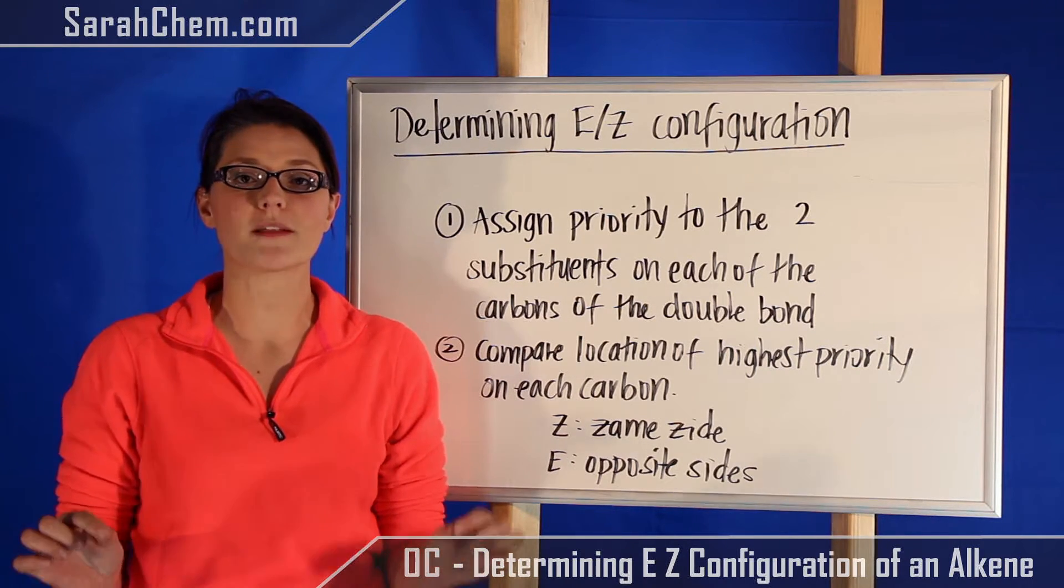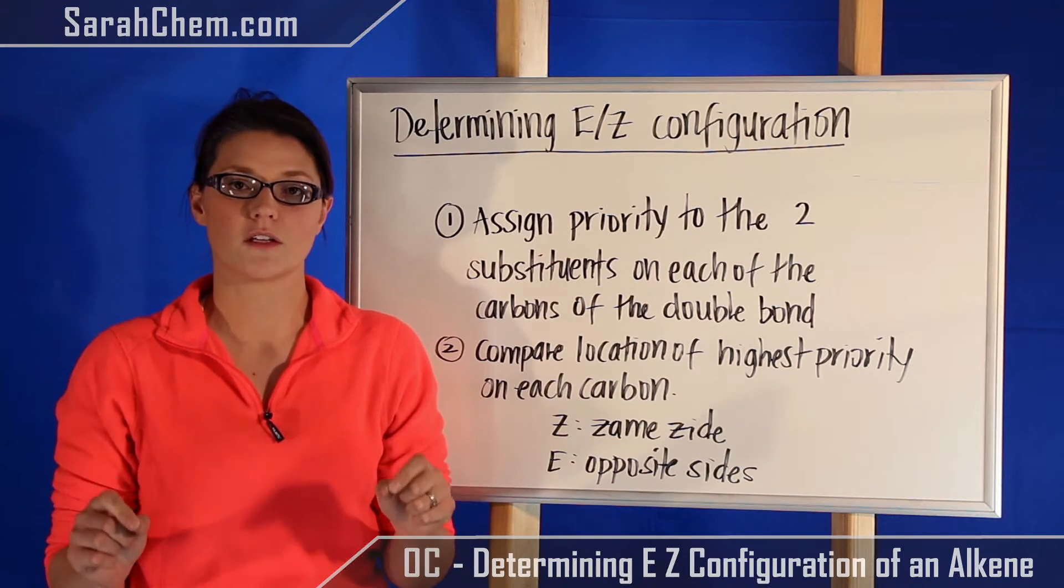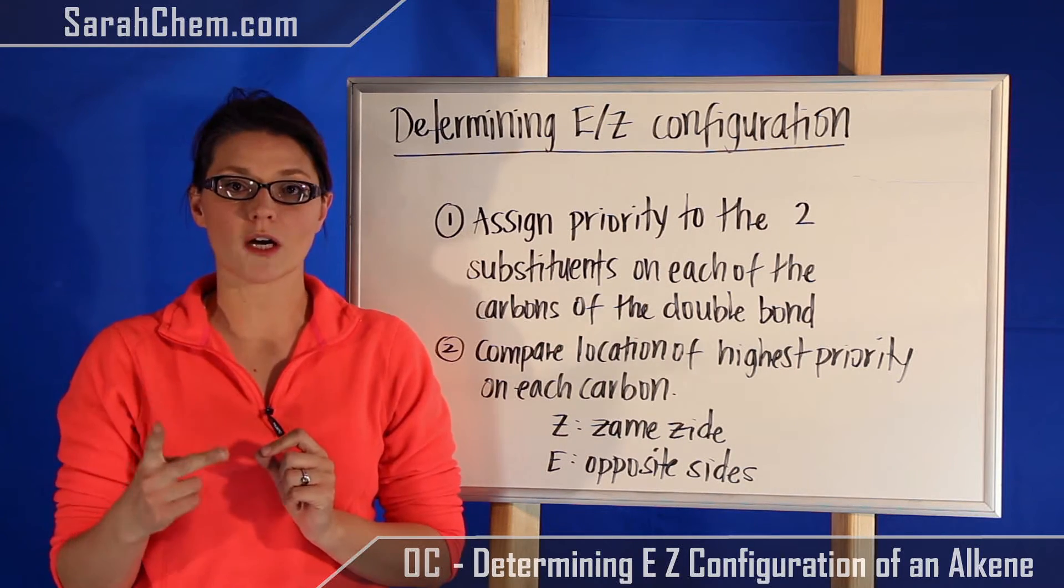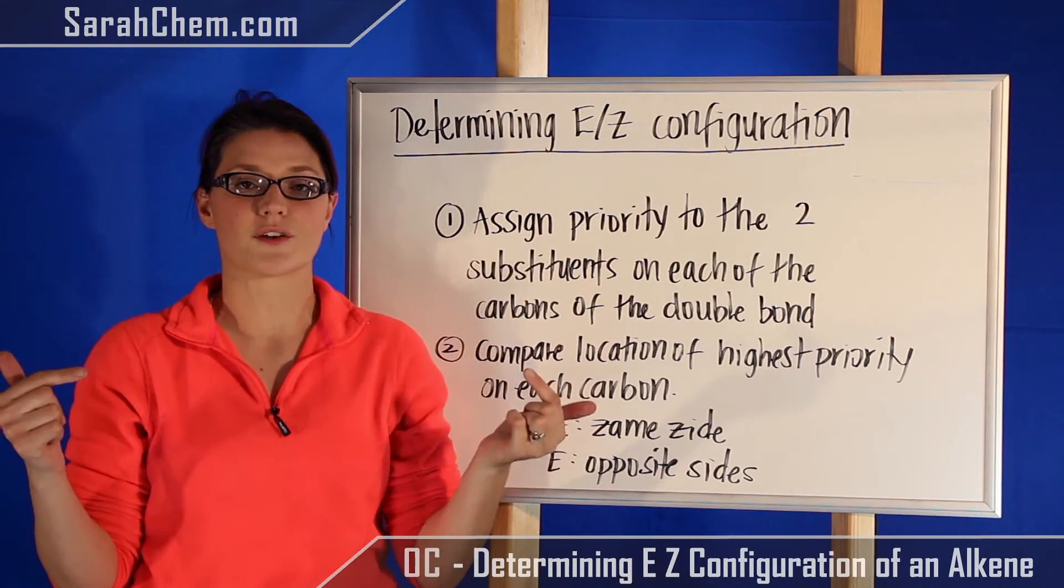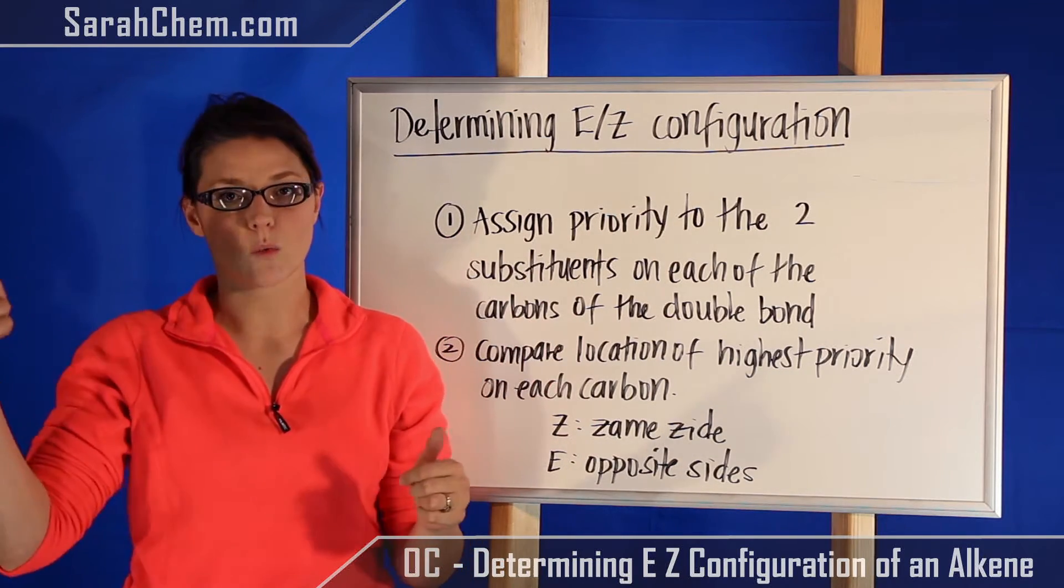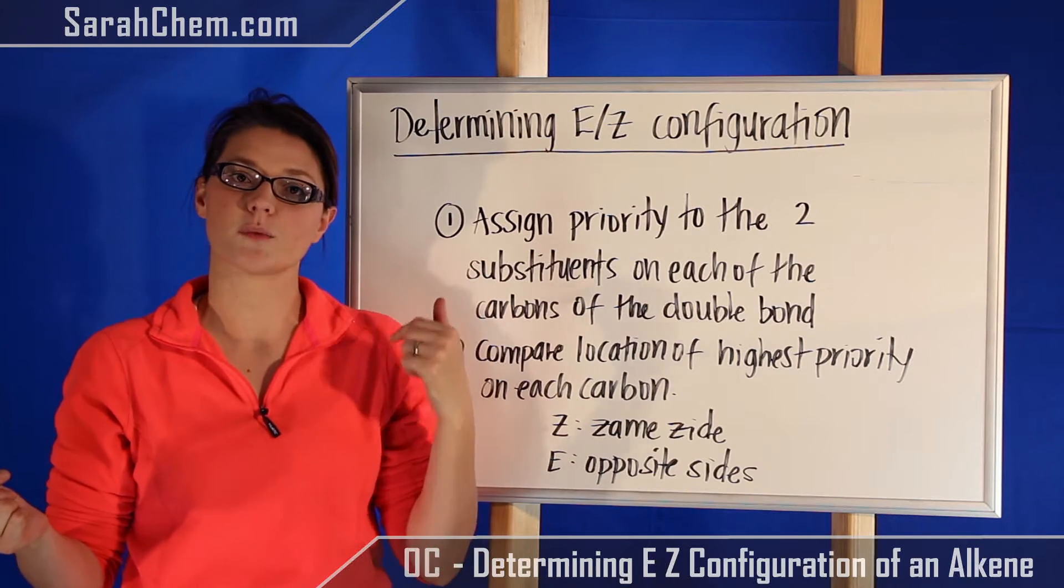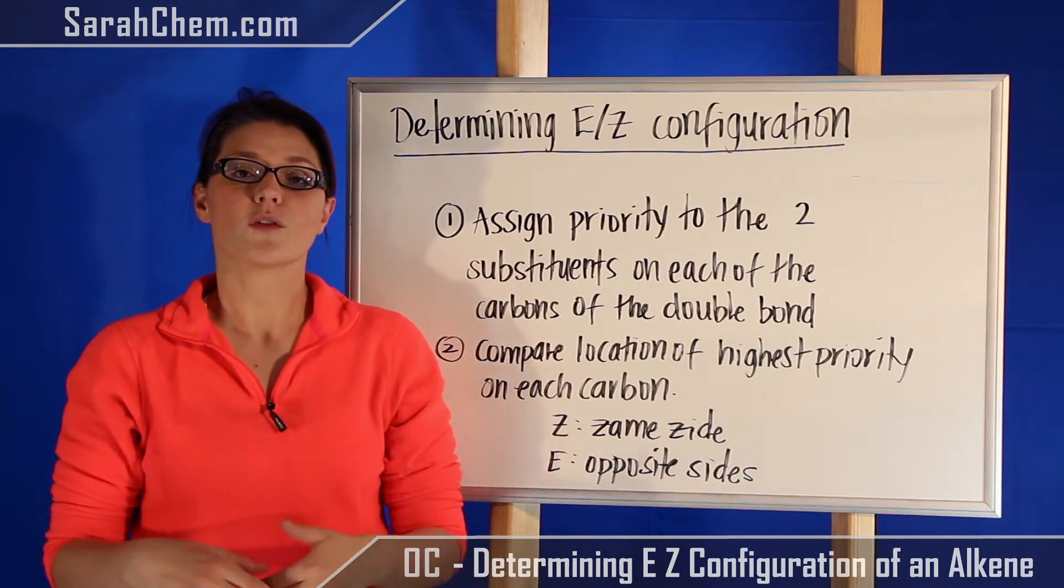attached to the carbons that are participating in the double bond. So in a double bond you'll have two carbons, and on each one you want to assign priorities to the two groups that are attached to them. So we'll have priority one, two, and on the other carbon will also have priority one, two.